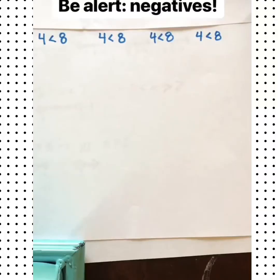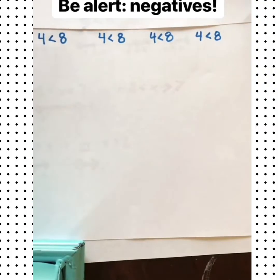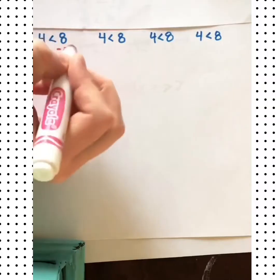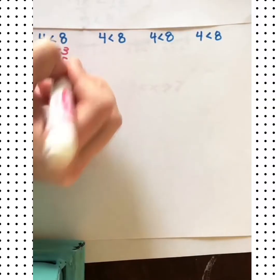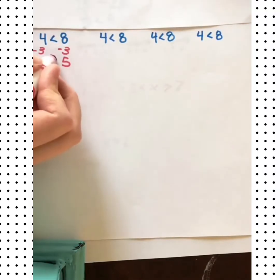Let's do a quick experiment to see what happens when negatives get involved and how they can cause some issues. So, starting out with just 4 and 8, we know that 4 is less than 8. But let's try some different things. What if we subtract 3 from both sides? So we have 1 and we have 5. Is the sign still okay? Is 1 less than 5? Yes, so that's fine.